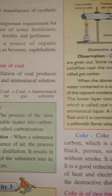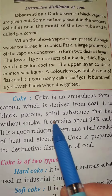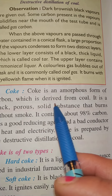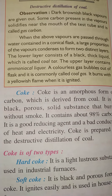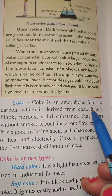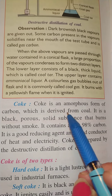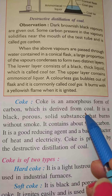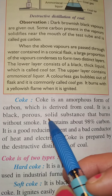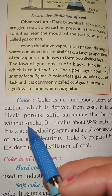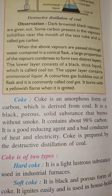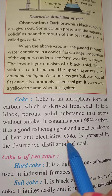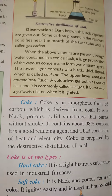First, we will discuss coke. Coke is an amorphous form of carbon which is derived from coal. It is a black, porous, solid substance that burns without smoke. It contains about 98% carbon, and it is a good reducing agent and a bad conductor of heat and electricity.